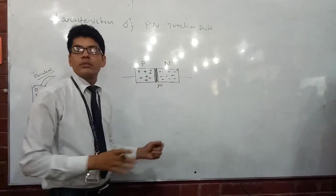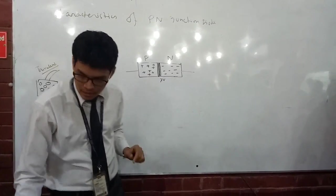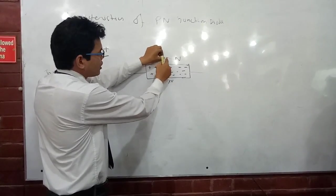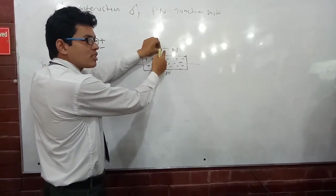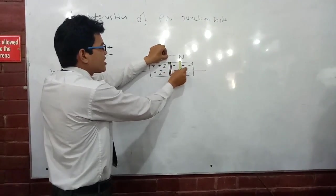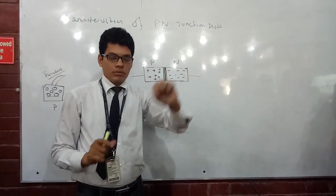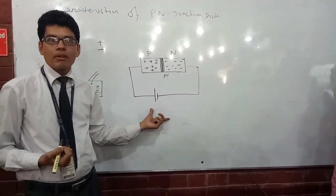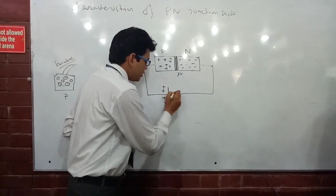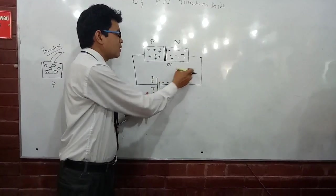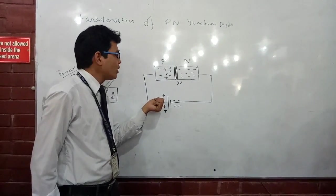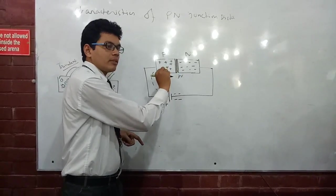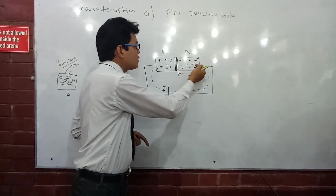Under normal state, holes from the positive portion and electrons from the negative portion diffuse with each other and create an electric field opposing further combination. Once you connect this diode with an external battery — if P is connected to positive and N to negative, this is forward bias. The positive charge will repel the holes toward the junction, and the negative will repel the electrons toward the junction.